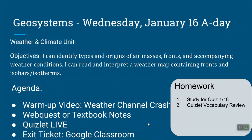Our second objective was: I can read and interpret a weather map containing fronts, isobars, and isotherms. We started off class with a quick video from the Weather Channel and Crash Course, and then we used the online textbook and the paper textbook to take some notes about air masses and fronts. We played a couple games of Quizlet Live, and then we finished off class with a Google Classroom exit ticket that was graded and did go into the gradebook.